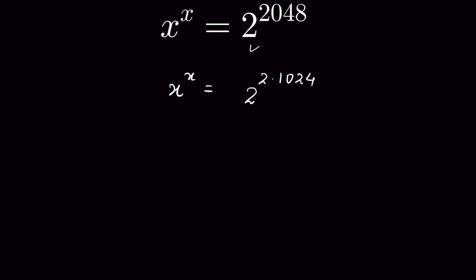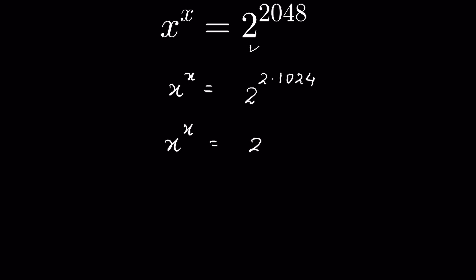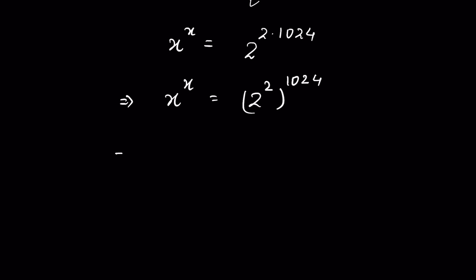Now, there is an identity: if a to the power m times n, we can write it as a to the power m, whole to the power n. Using this identity, we can write 2 to the power 2, whole to the power 1024. So x to the power x is equal to 4 to the power 1024, since 2 to the power 2 is 4.